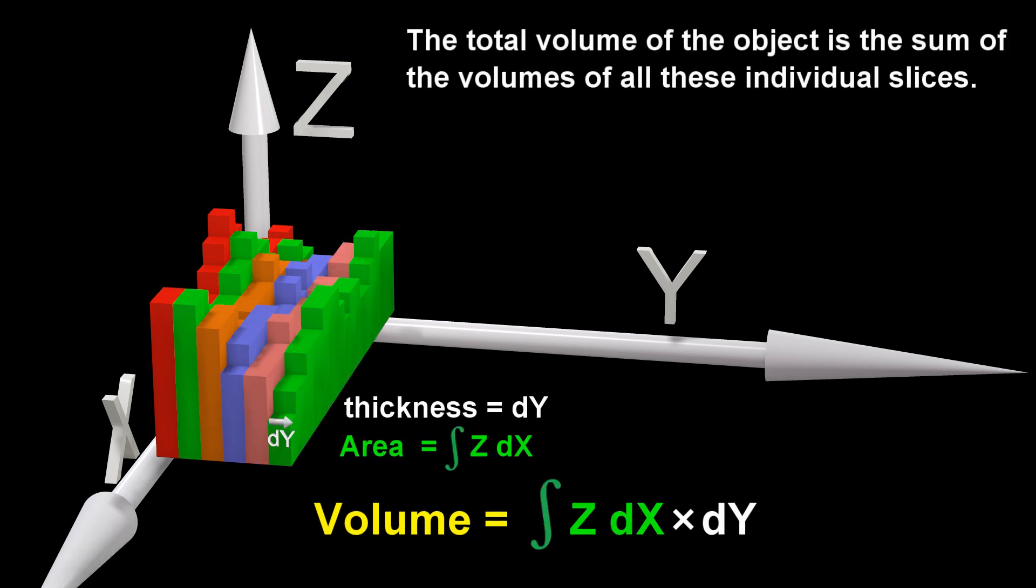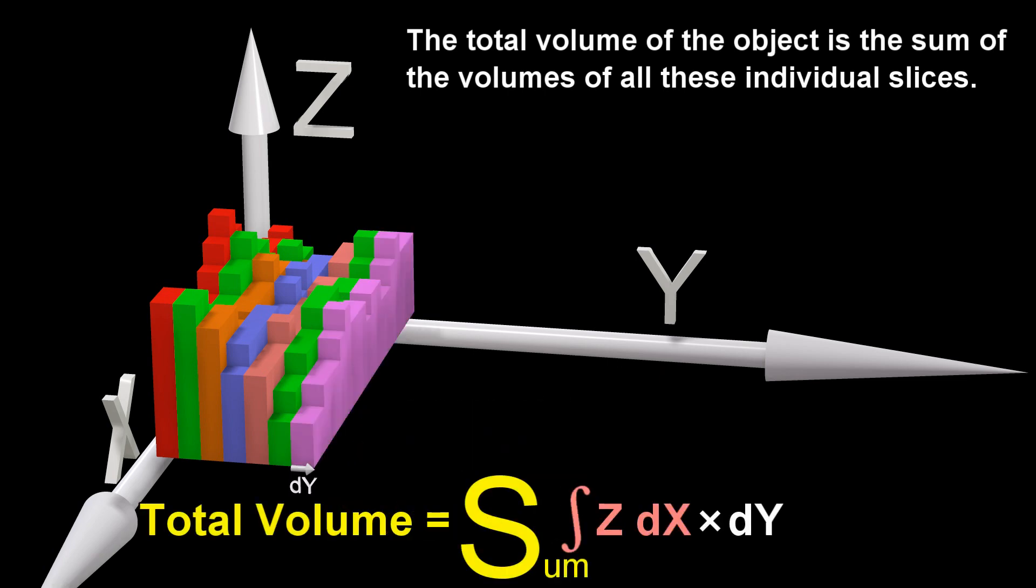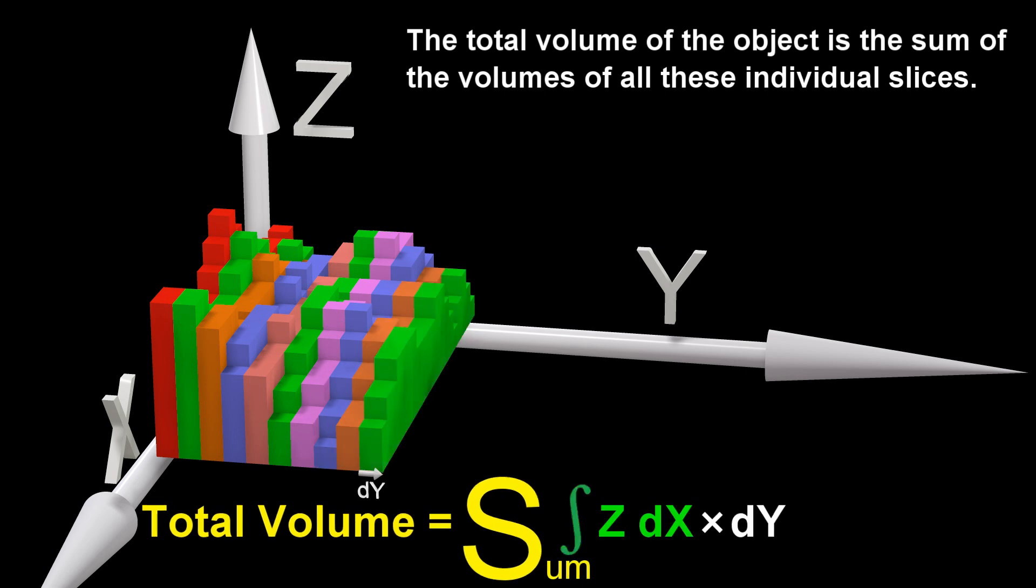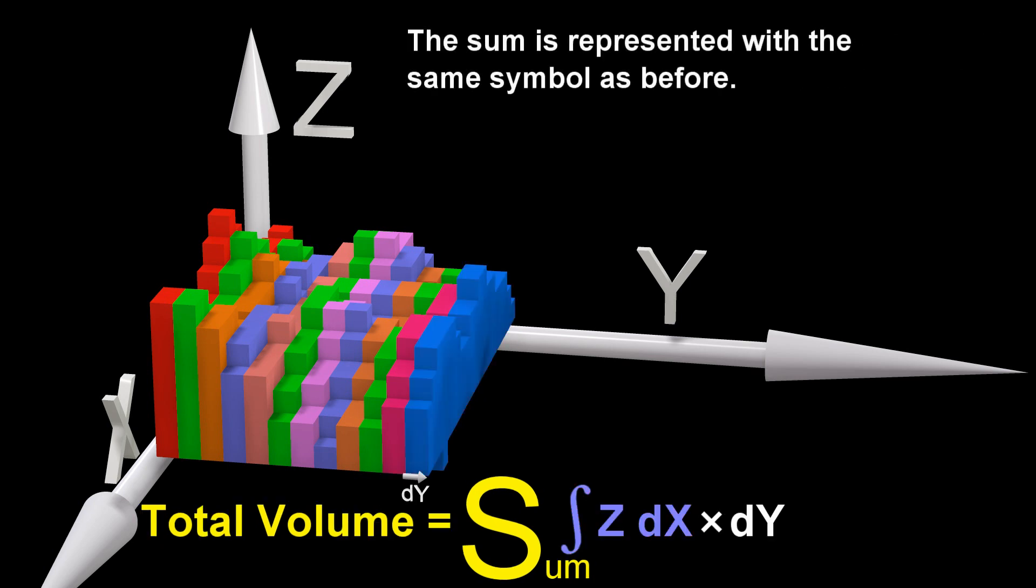The total volume is the sum of the volumes of all these individual slices. The sum is represented with the same symbol as before.